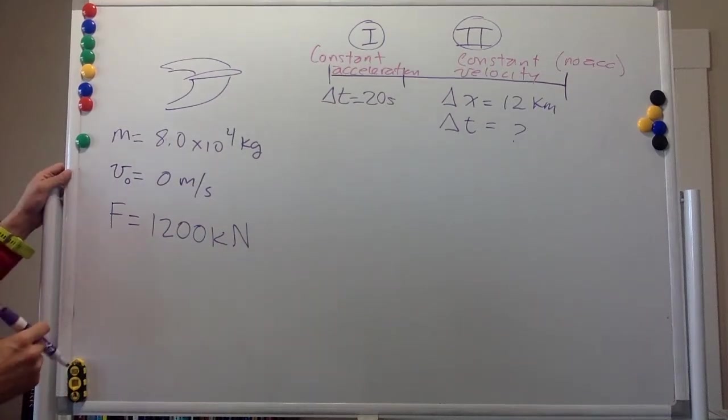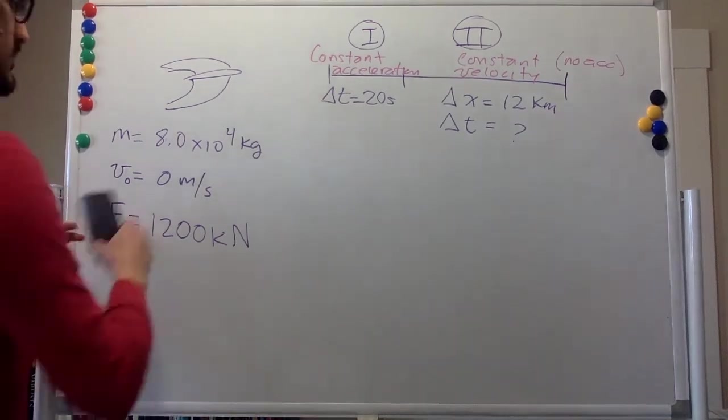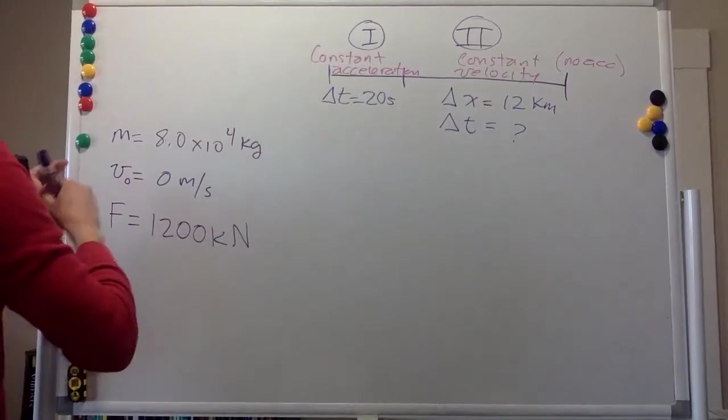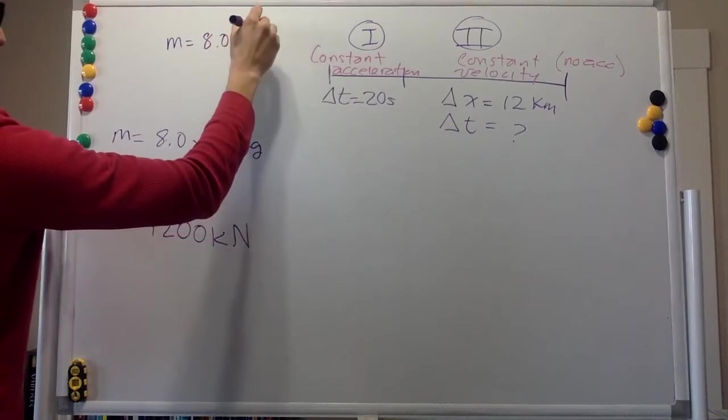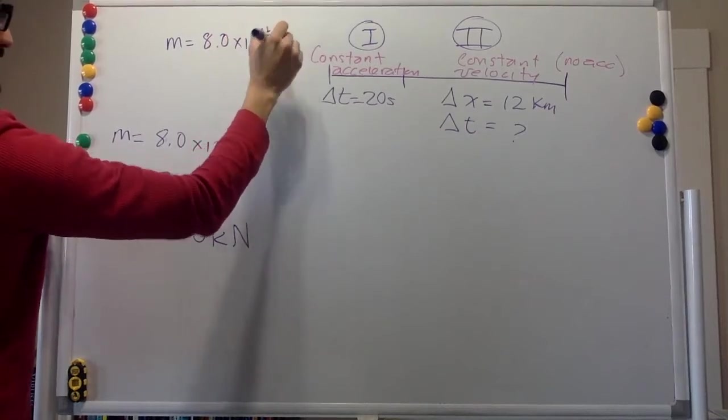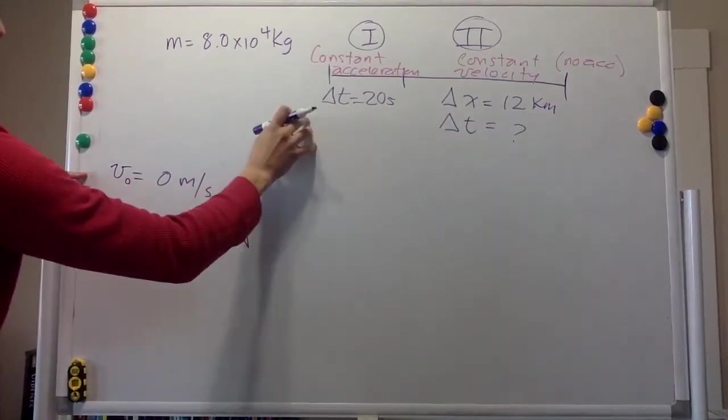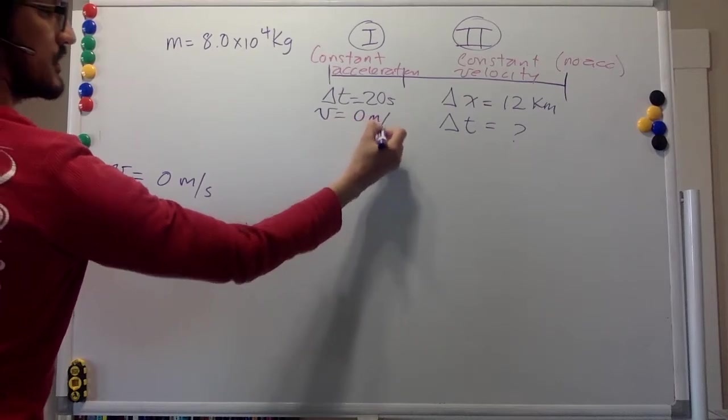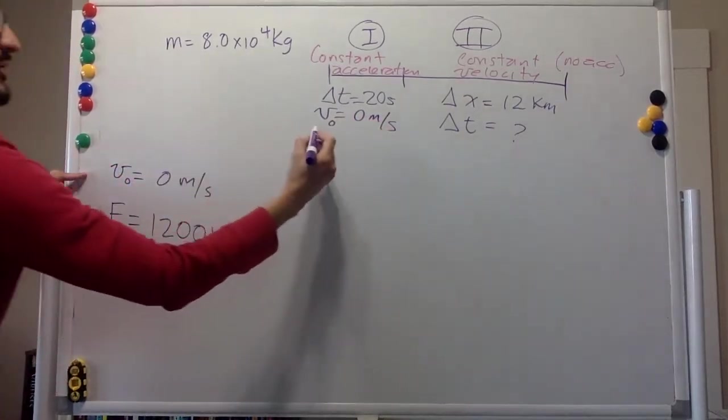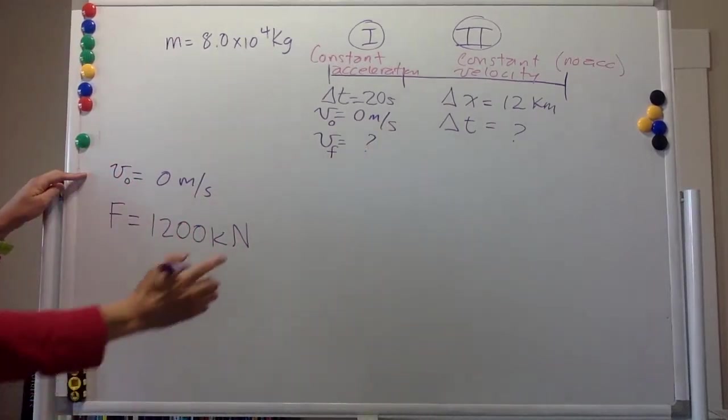So we have a different set of variables. The mass is the same all the time. The initial velocity refers to the initial velocity of section, of the first section. The final velocity, we don't know the final velocity. We have to calculate it.